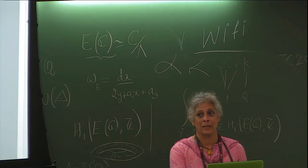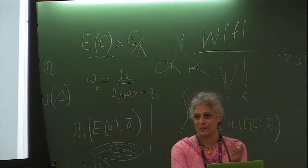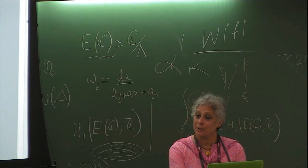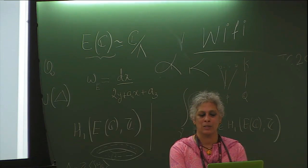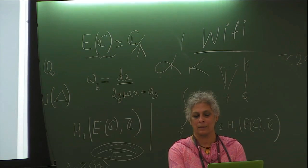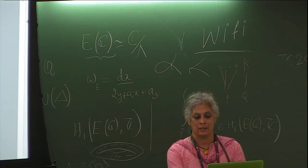The Birch–Swinnerton-Dyer conjecture is partly about understanding how large the set of solutions is. You give a quantity that estimates the size of each solution — this was first done by Néron–Tate. One approach over Q is to take the maximum of the size of numerator and denominator of the coordinates. This was refined into something called the Néron–Tate height. If you want to show the set of solutions is finite, you show solutions cannot be larger than some given size and that everything smaller than that size is finite.